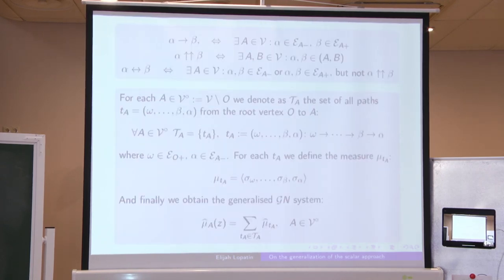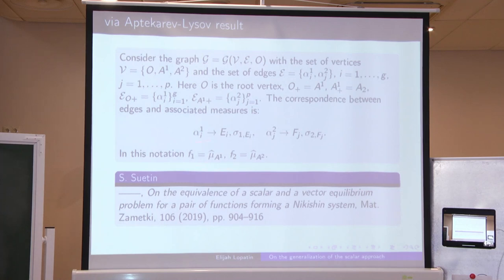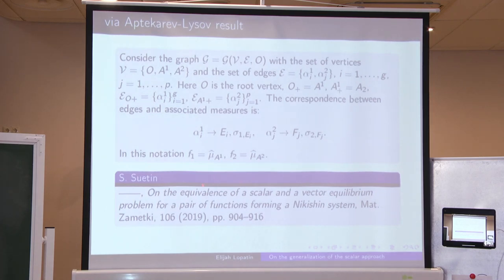I will omit the estimation of asymptotics of Q_N^1 and say a bit about the connections with the Aptekarev-Lysov result. They considered Markov functions generated by a special graph. Here is the construction of the graph which gives us the functions under consideration. Aptekarev and Lysov proved the result for polynomials of type 2 — in fact a much more general result — but from their result follows the weak asymptotics of type 2 for this pair of functions. Moreover, they proved that for functions F1 and F2 of this form, the vector equilibrium problem and the scalar equilibrium problem are equivalent.